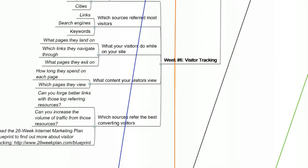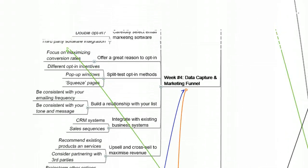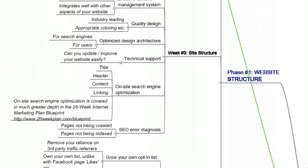Okay, so that is the end of phase one. I just wanted to give you a very brief synopsis of website structure — the first phase of the 26-week internet marketing plan. Hopefully that's given you a reasonable overview of where to start off with and why it's so important to lay a solid foundation to your internet marketing business. If you do that, then you'll be able to move on to a more automated next phase. So that's phase one — website structure. Hope you find that useful. Thanks for watching.